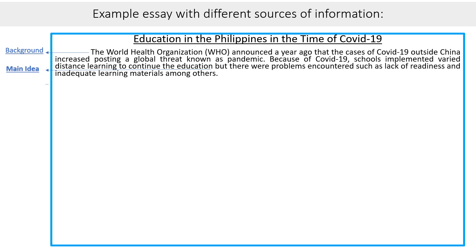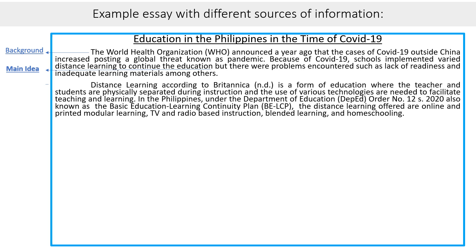In the body, the first paragraph discusses distance learning. Distance learning, according to Britannica, is a form of education where the teacher and students are physically separated during instruction, and the use of various technologies are needed to facilitate teaching and learning. In the Philippines, under the Department of Education Order No. 12, Series of 2020, also known as the Basic Education Learning Continuity Plan, the distance learning offered are online and printed modular learning, TV and radio-based instruction, blended learning, and homeschooling. The definition of distance learning came from Britannica, an encyclopedia.